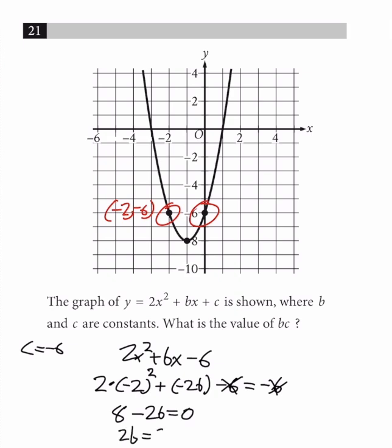2b equals 8, b equals 4. So c is negative 6, b is 4, bc is negative 24.